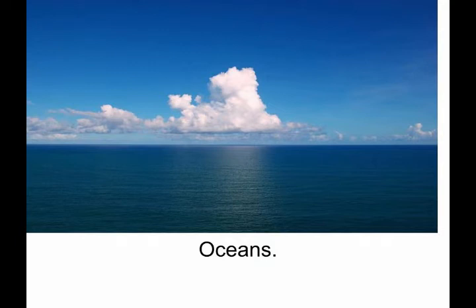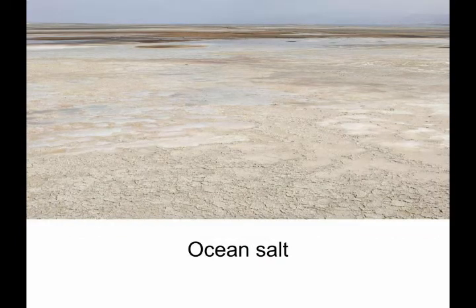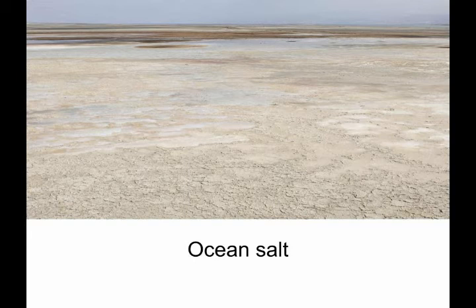Next question: why is the seawater salty? Ocean salt primarily comes from rocks on land. Rainwater that falls on the land is slightly acidic, so it erodes rock. This releases ions that are carried away to streams and rivers that eventually feed into the ocean. Many of the dissolved ions are used by organisms in the ocean and are removed from the water. That is why seawater is salty.